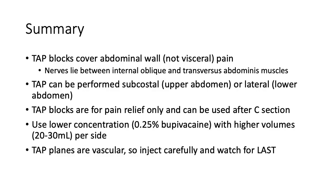To summarize: TAP blocks cover abdominal wall pain but not visceral pain. The nerves lie between the internal oblique and transversus abdominus muscles. TAP blocks can be performed at the subcostal level for the upper abdomen or lateral for the lower abdomen, and are for pain relief only — not surgical anesthesia. Use a lower concentration such as 0.25% bupivacaine with higher volumes of 20 to 30 milliliters per side. TAP planes are vascular, so inject carefully, aspirate every 5 mils, and watch for LAST.